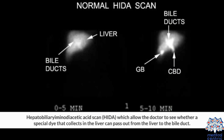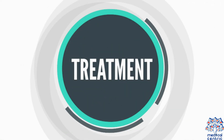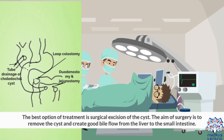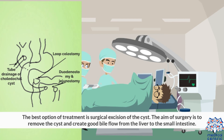A hepatobiliary iminodiacetic acid scan, or HIDA scan, allows the doctor to see whether a special dye that collects in the liver can pass out from the liver to the bile duct. Treatment: the best option is surgical excision of the cyst. The aim of surgery is to remove the cyst and create good bile flow from the liver to the small intestine.